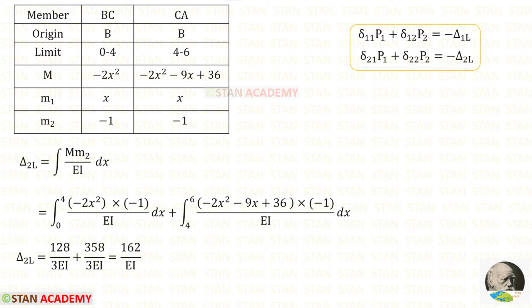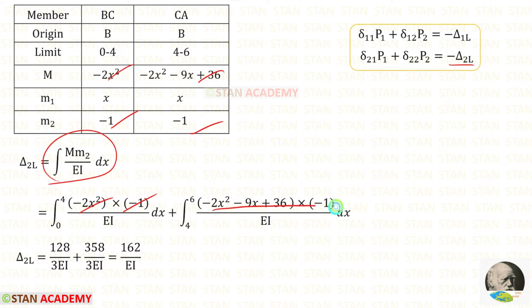Now let us find delta 2L. The formula is the integration of M·M2 divided by EI dx. After applying the values of M and M2 and performing the calculation, we get 162 divided by EI.